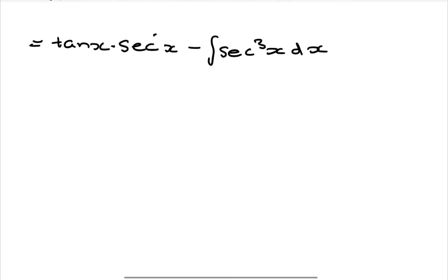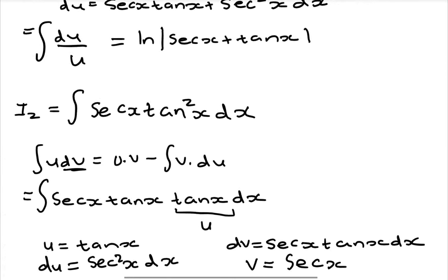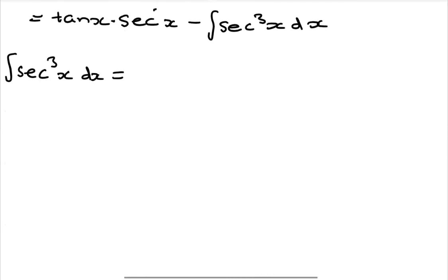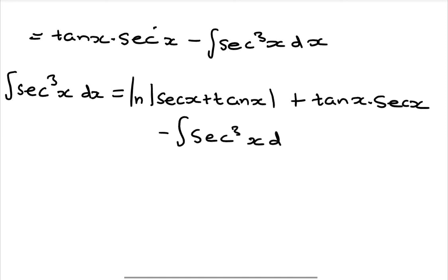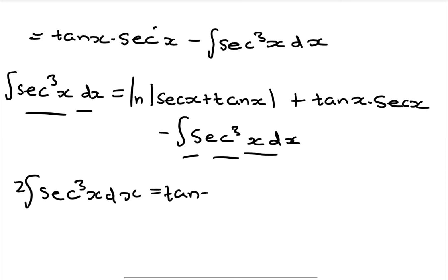Now remember that our initial integral was sec³(x) dx. We found our first solution I1 equals ln|sec(x) + tan(x)|, and we found our second part as tan(x)sec(x) minus the integral of sec³(x) dx. Since this sec³(x) integral is the same as our original, bringing it to the other side makes it a plus, so that we have 2 times the integral of sec³(x) dx equals tan(x)sec(x) plus ln|sec(x) + tan(x)| plus a constant.